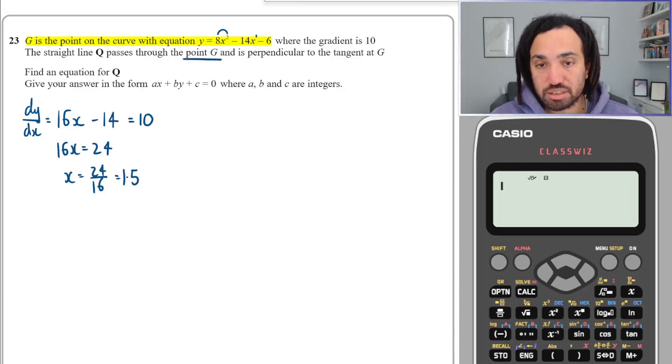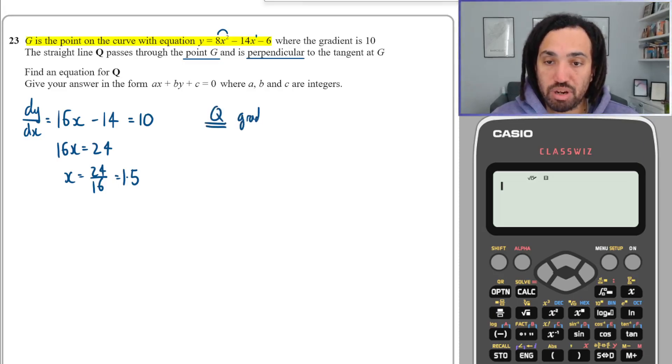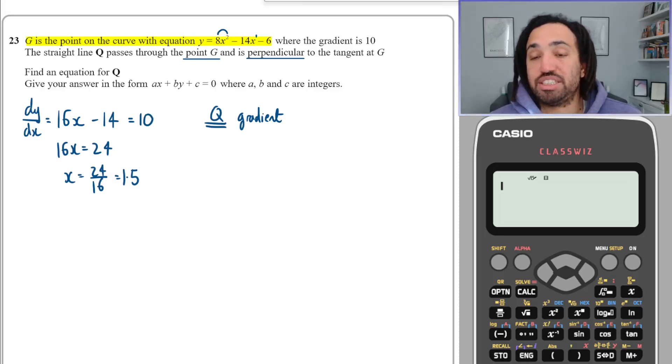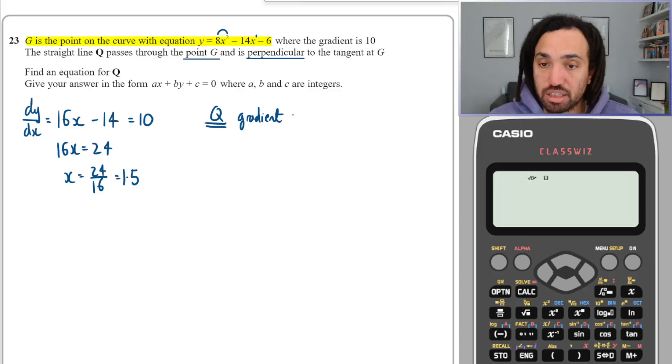Now it says that the straight line Q passes through the point G and is perpendicular to the tangent. So what do we know about Q? We know the gradient of Q. The gradient is perpendicular to the gradient of the tangent, and the gradient of the tangent is just the gradient at that particular point.